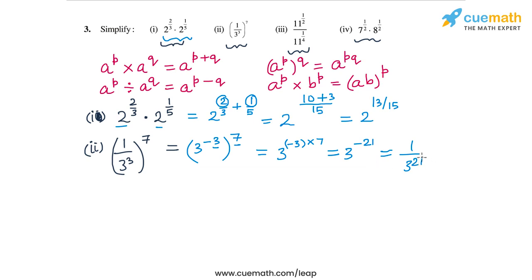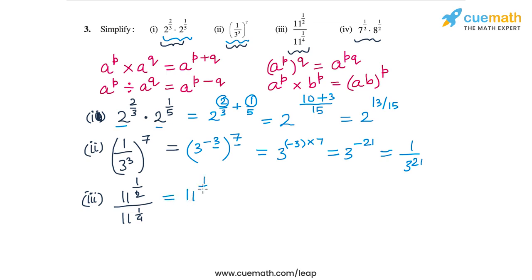For the third part, the expression is 11 to the power 1/2 divided by 11 to the power 1/4. The base is the same and we are dividing, so the exponents subtract: 11 to the power (1/2 minus 1/4). Since 1/2 minus 1/4 equals 1/4, the answer is 11 to the power 1/4.